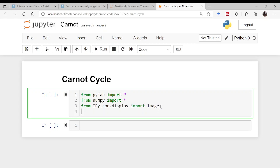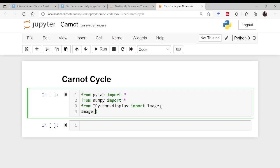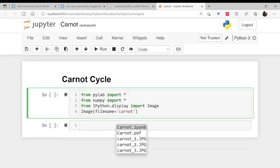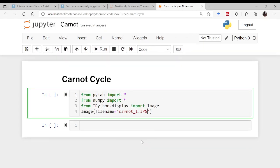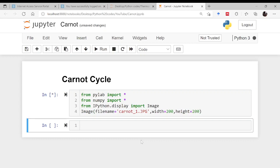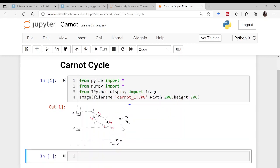That is simply done: Image, you give the file name carnot_2.jpg, give the width to this let us say 200, give the height let us say 200 and then simply run this. This will bring the image here.